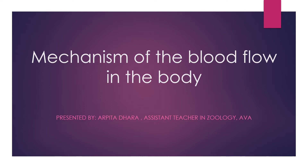The first one is the heart, which is the pumping organ of our body. In the case of humans, it's a four-chambered heart — two atria and two ventricles. The next thing is the blood vessels. Arteries carry blood from the heart to the body, and veins carry blood from the body to the heart. Blood is the medium important for the transportation of all essential materials to each and every part of our body.